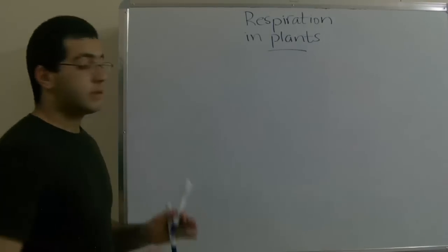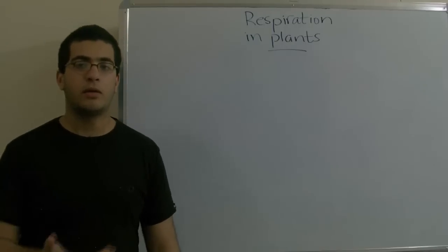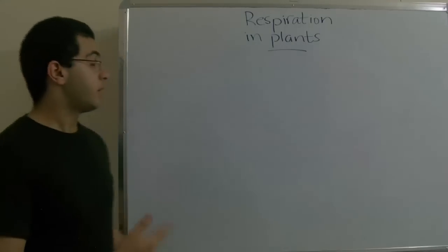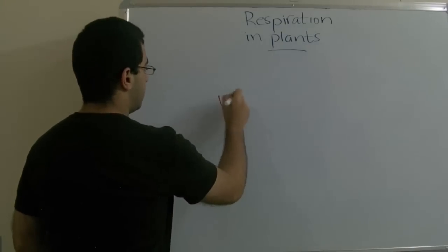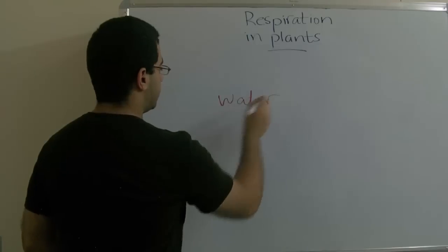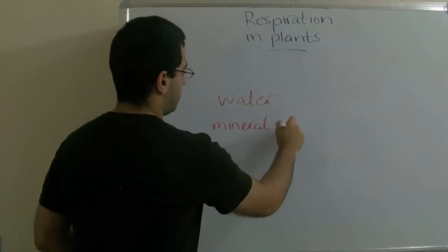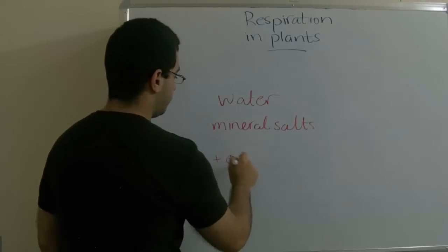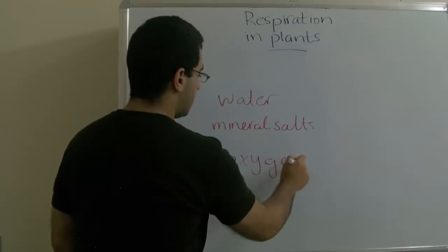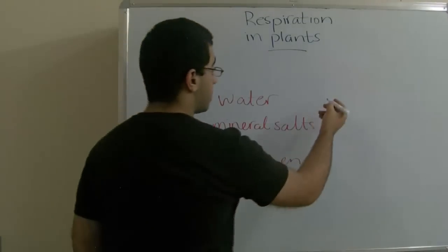We know that plants perform the photosynthesis process in order to obtain oxygen and other essential materials such as water and mineral salts, plus oxygen, in order to make high energy carbohydrates.